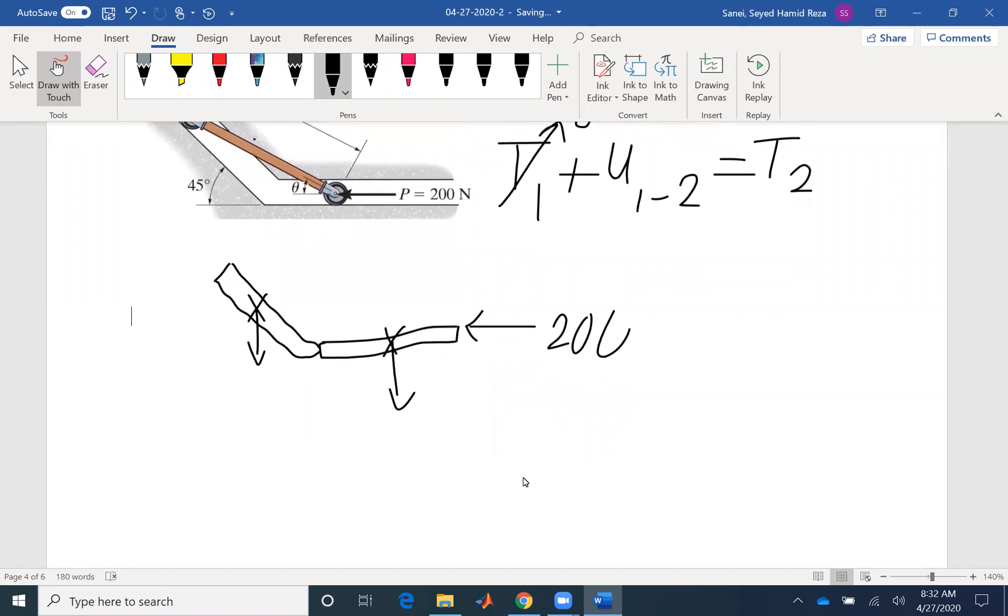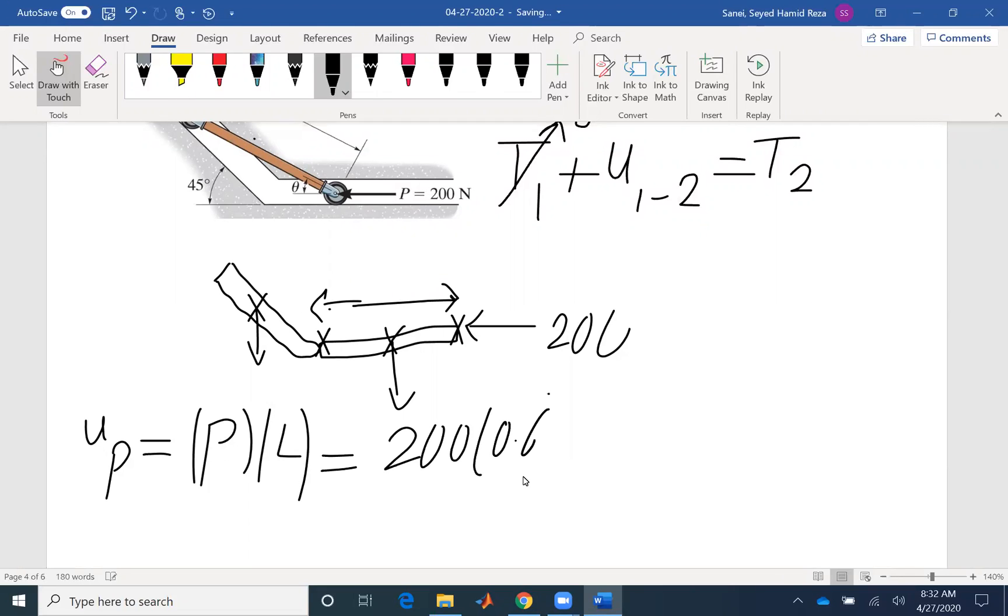We have two components of force. The work that is done by force P is P times L because this point is moved the whole length which is L. So magnitude of P is 200, L is 0.6 meter or 600 millimeters, so it's 120 newton meter or joule.